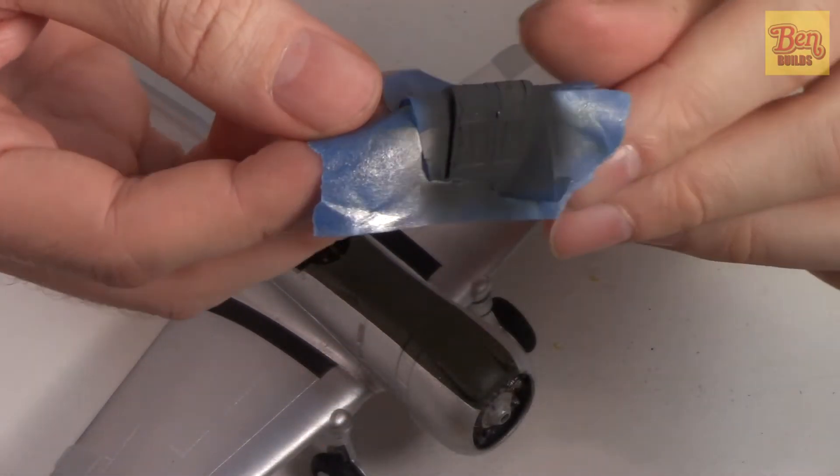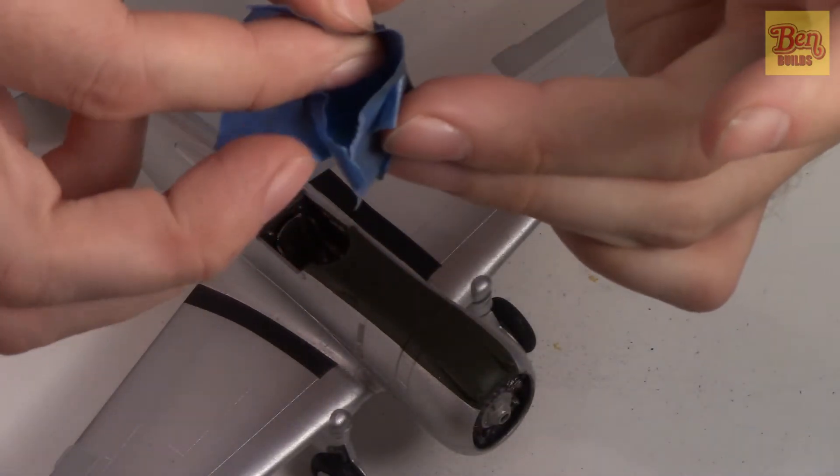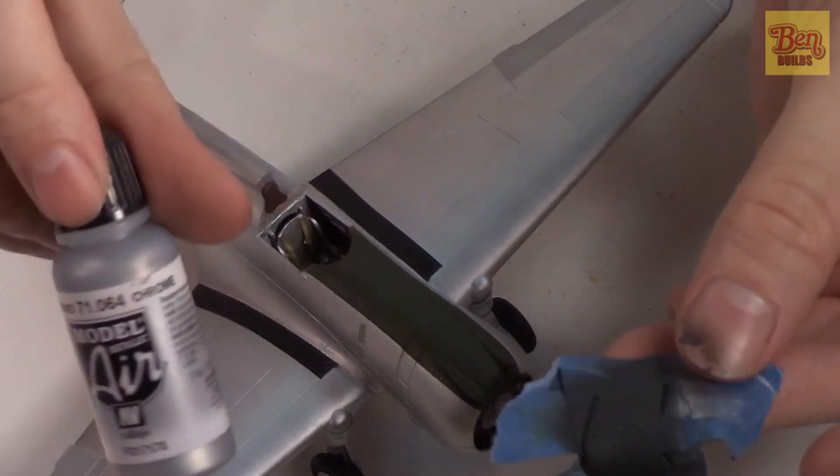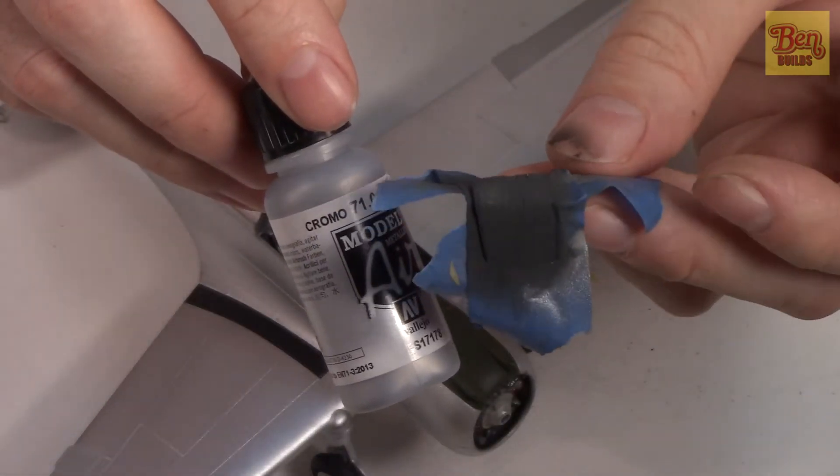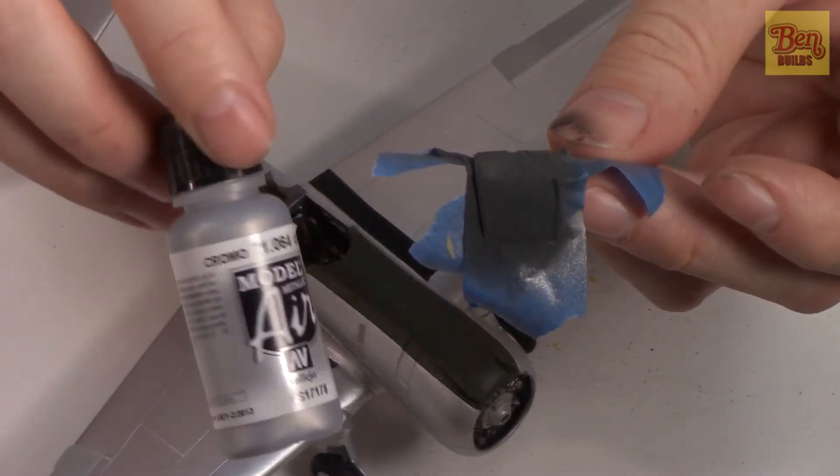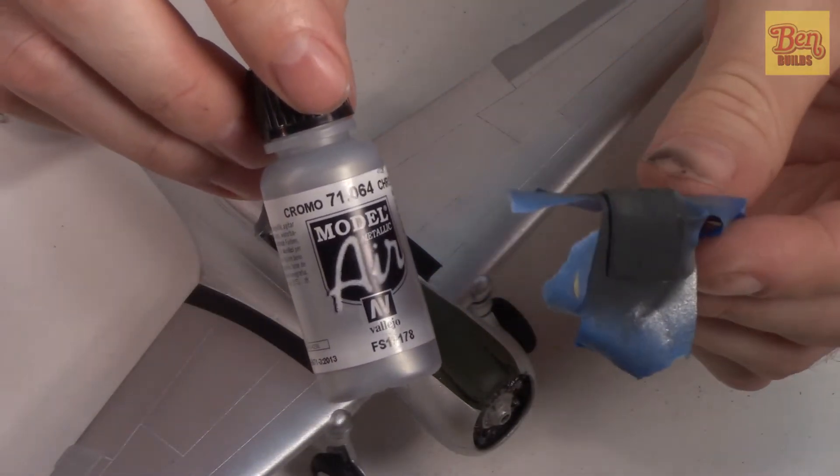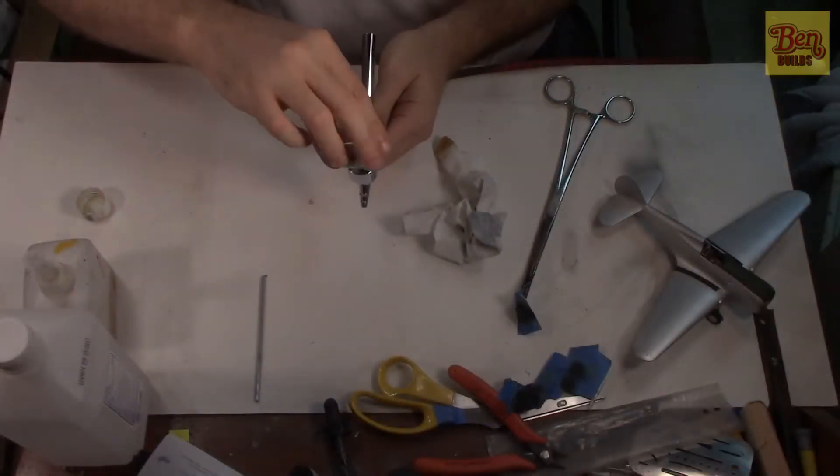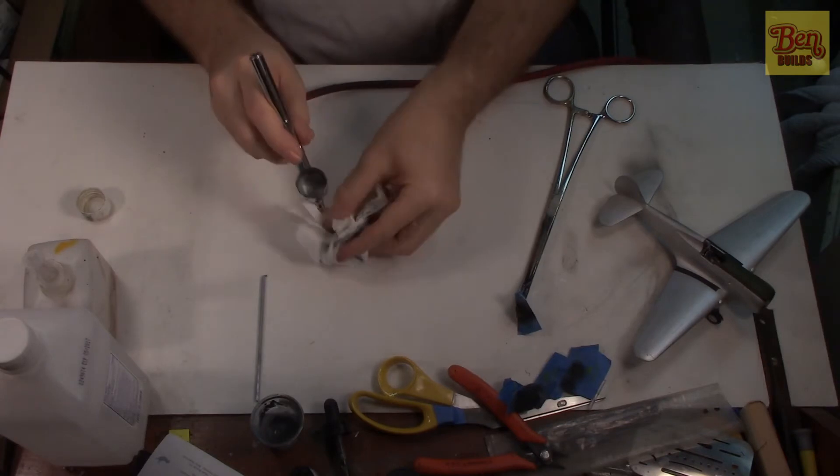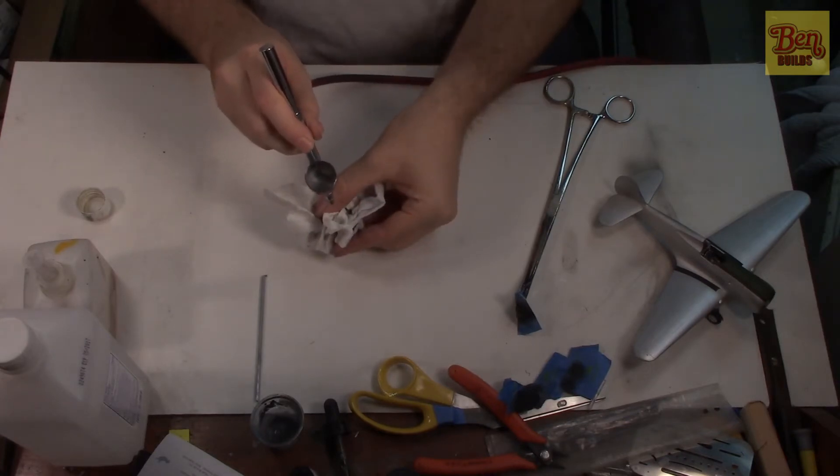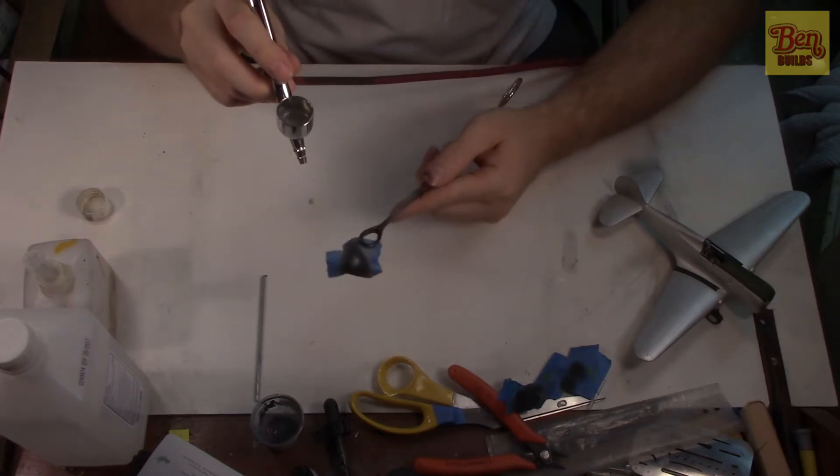I'm going to be using this Model Air chrome color that we picked up last time to paint on the canopy, so we'll have the rear windows, the windscreen, and the center sliding section. Painting this up, I'm going to use just your basic mixture of five parts thinner to one part paint, just some light easy coats over the top of this to get this all covered up because it's got that NATO flat black on there.